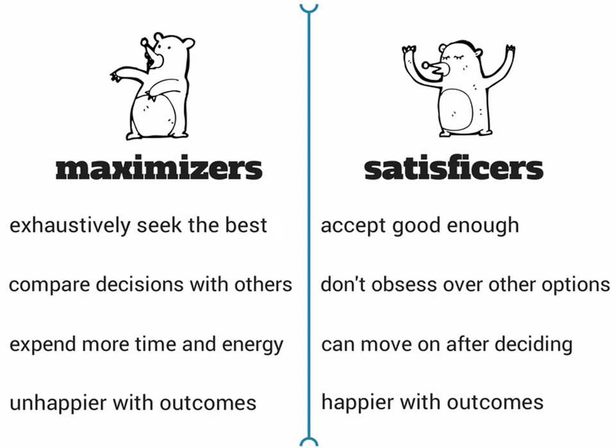Satisficers, on the other hand, are people who are content with good enough. They understand that what they have chosen may not be the best of all possible outcomes, but it's good enough to get you by and get the job done. So they don't obsess over what other options might be out there, they don't second-guess themselves and have regret — they make the decision and move on. By and large, satisficers are happier with life in general and certainly with the decisions they make than maximizers are.